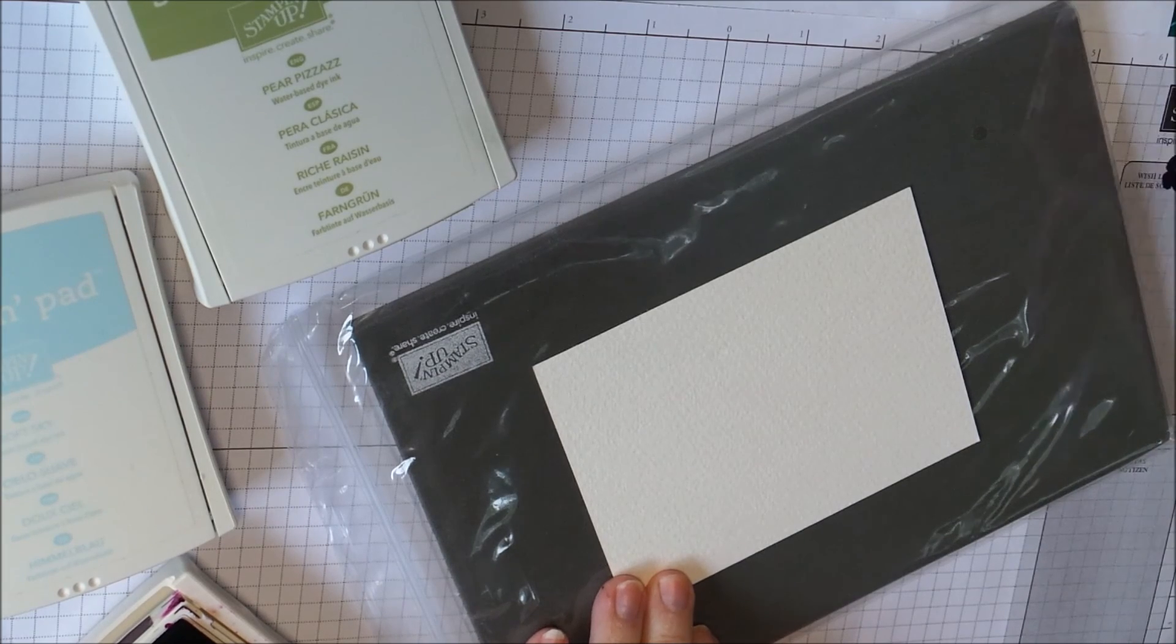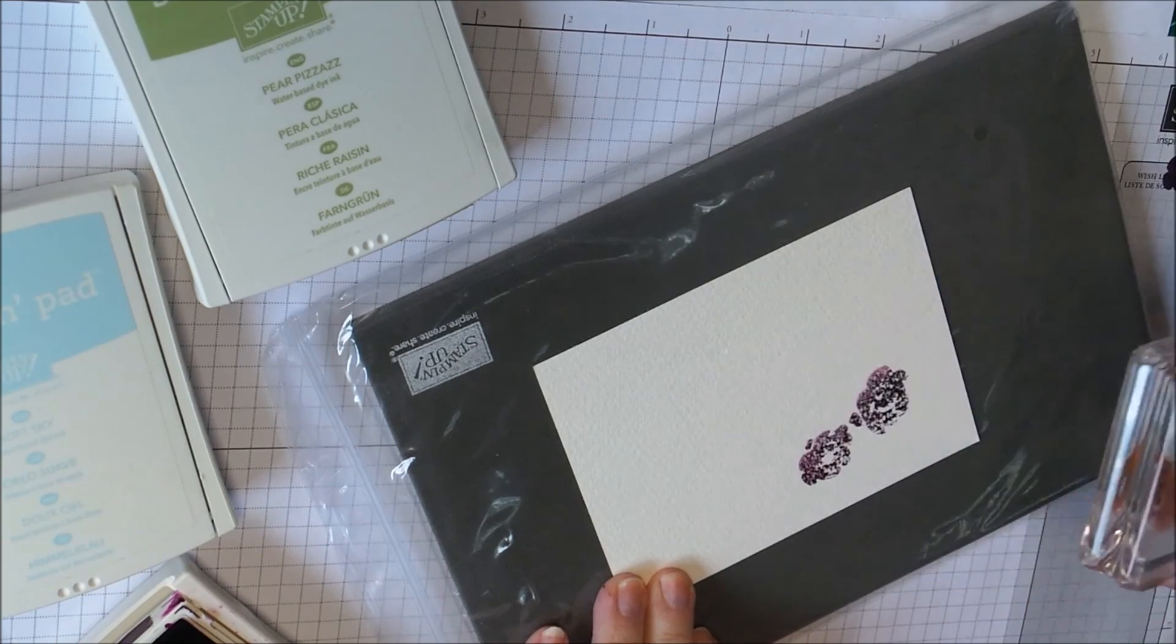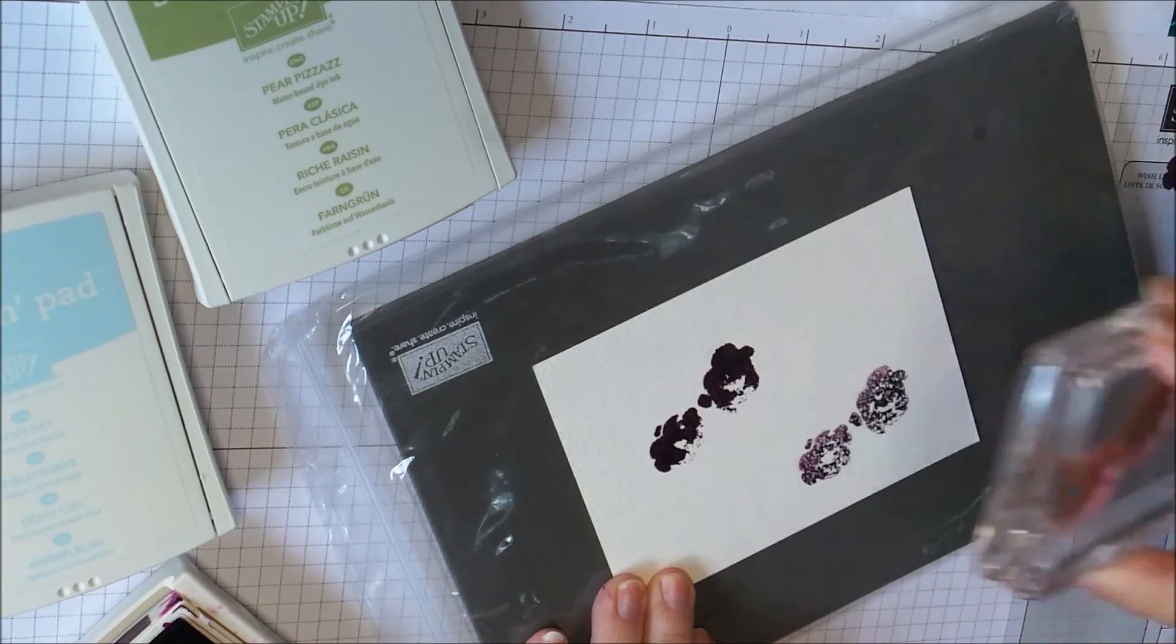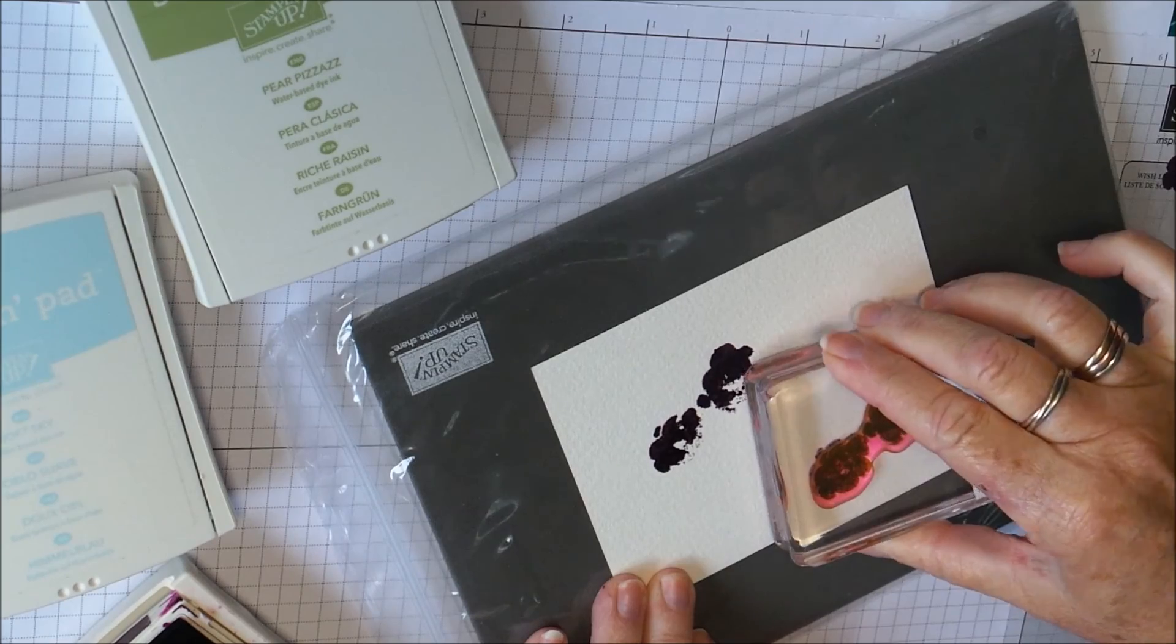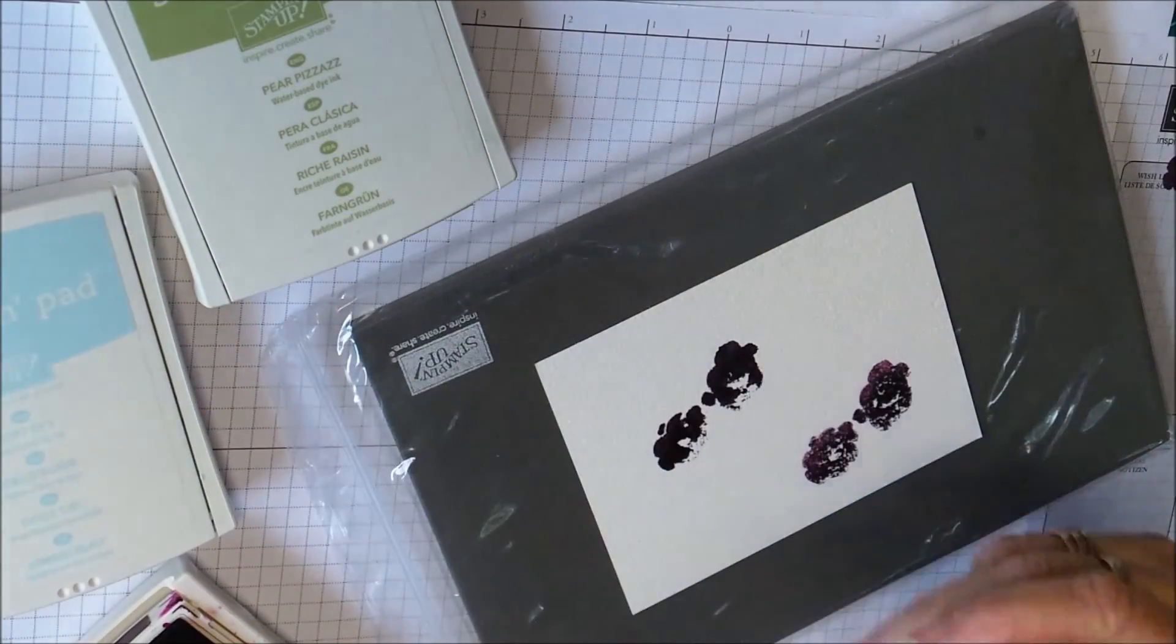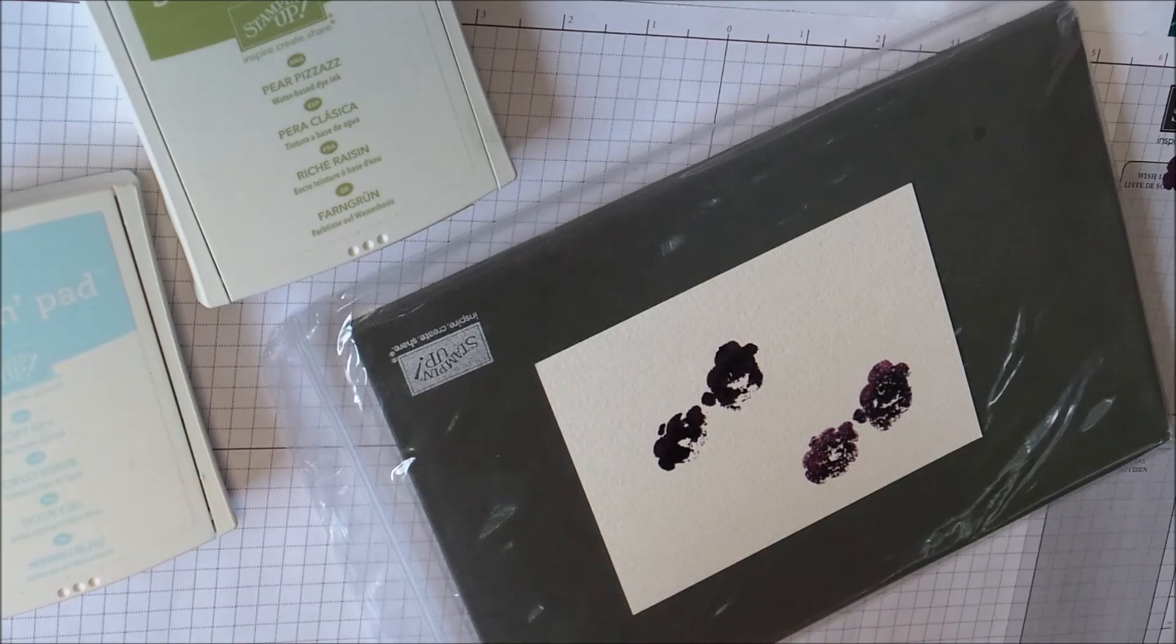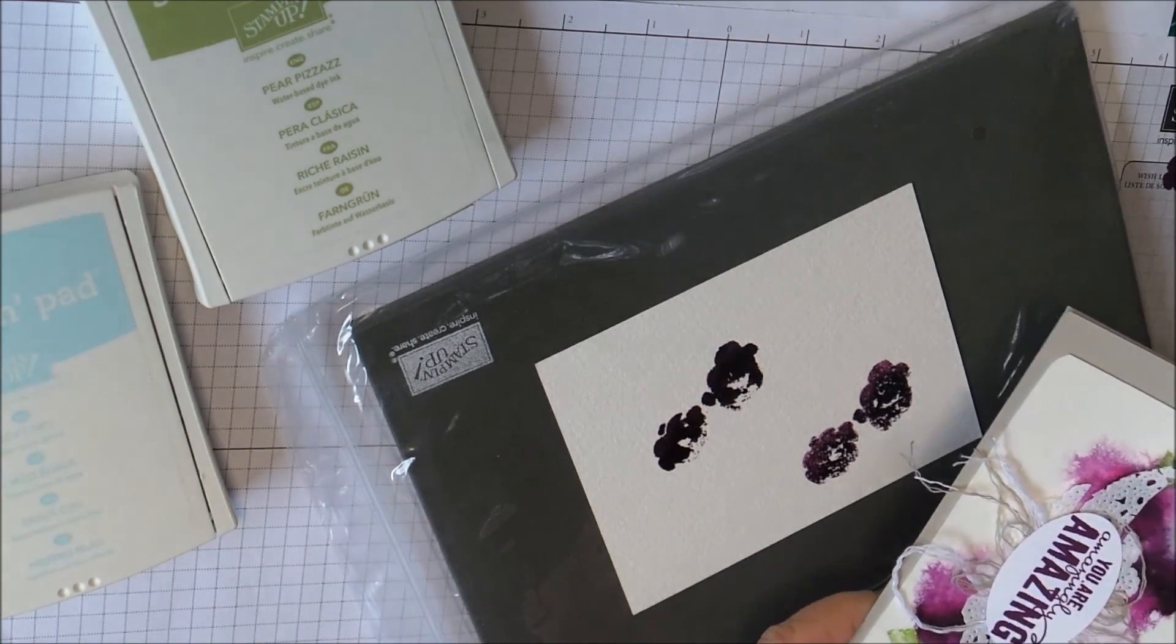I might stamp off a bit and I'm going to stamp here and here. It doesn't really matter about whether the image is clear or not because we're going to use our spritzer and just spritz that lightly to give this re-inker watercolor look.